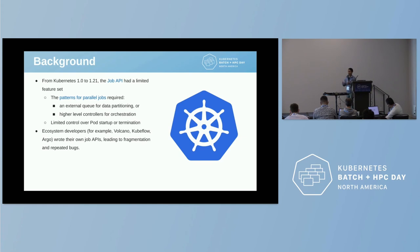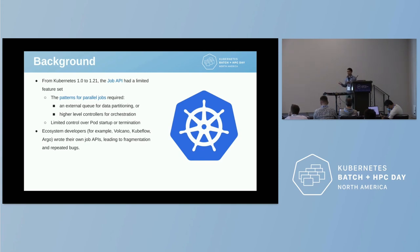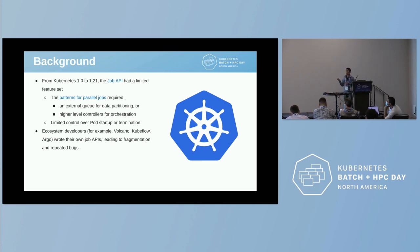This has caused a number of developers in the ecosystem — you've already heard of some of them during this batch HPC day — there were a number of projects rewriting the job controller. And this, of course, leads to fragmentation, which makes it hard for providers to support. We were hearing earlier that now we have all these different APIs we have to support — which ones does my provider support? And also, a number of bugs done in one place are replicated in all these places.